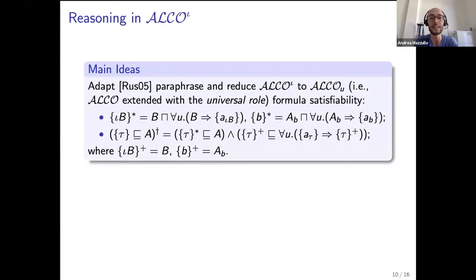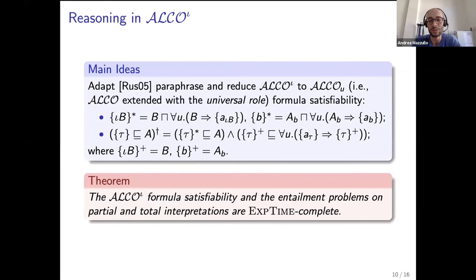Concerning reasoning in ALCO iota, formula satisfiability on partial and total interpretations can be reduced to ALCOU formula satisfiability on total interpretations, where ALCOU is ALCO extended with the universal role. We use ideas similar to Russell's paraphrase in that the concept the B is mapped to the concept that says A is B and B has at most one object. From these and a known result on formula satisfiability for ALCOU we get an EXPTIME upper bound that is matched by the corresponding lower bound, so ALCO iota formula satisfiability and entailment problems are EXPTIME-complete.